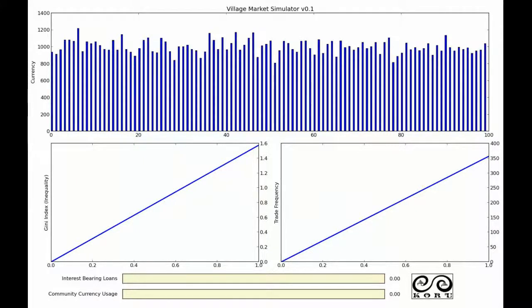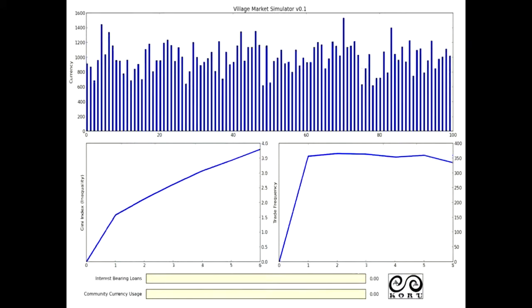I've written a simulation that I'm going to show you, and it takes us back about a hundred years into a village market. In that market we've got about a hundred people that are trading their goods and services together. Here on the simulation you can see in blue the balances, the amount of money that each person in the village has. And as they trade with each other you're going to see these balances start to change.